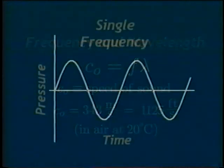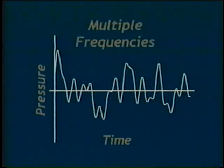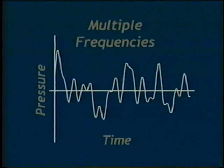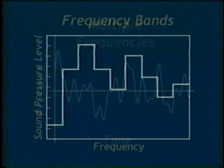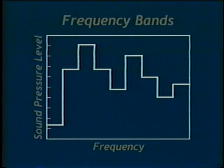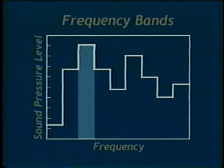Sound can have a single frequency component, as we earlier illustrated. Or, it can have multiple frequency components at varying amplitudes, thus making each sound distinctive. This type of sound is complex. Most real-life sounds are complex. For convenience, the frequency components of a complex sound source are very often studied in terms of octave or fractional octave bands. These bands each cover a range of frequencies and are referred to by the center frequency of the band.